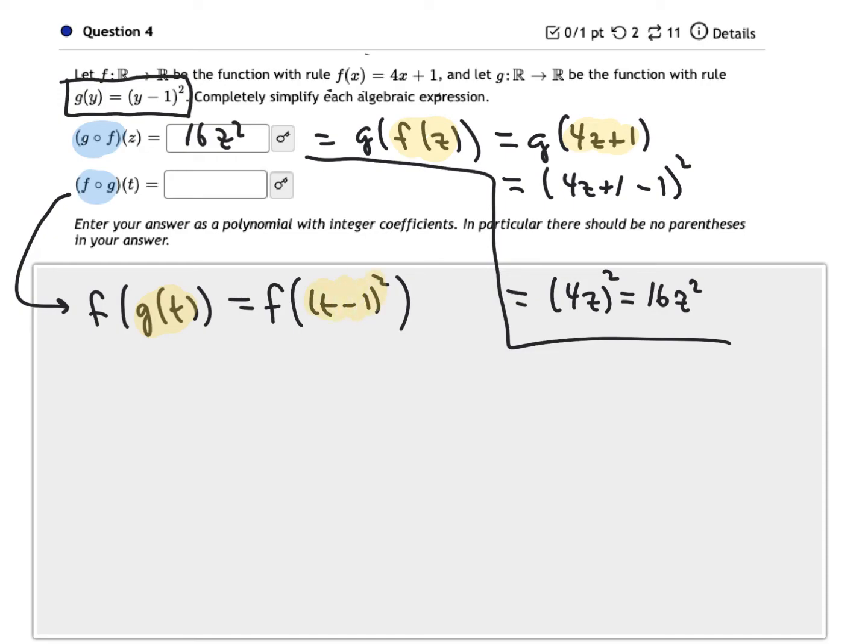So all I've done is replace the g of t that's inside those parentheses with t minus 1 squared. Because that's what g of t does. So let's get rid of that. So my next step would be to figure out what is f of that stuff.